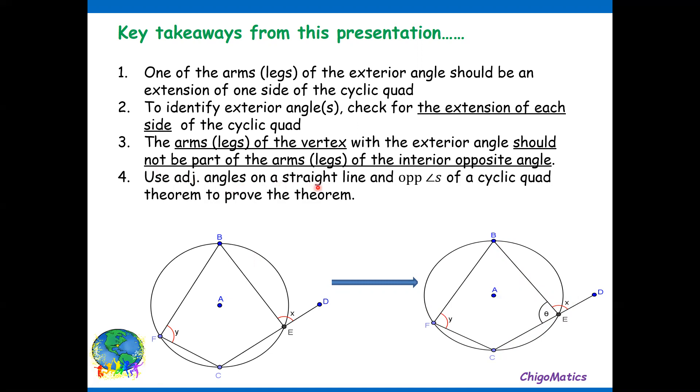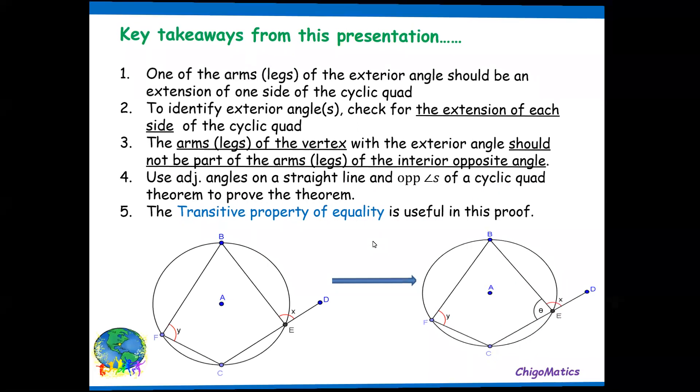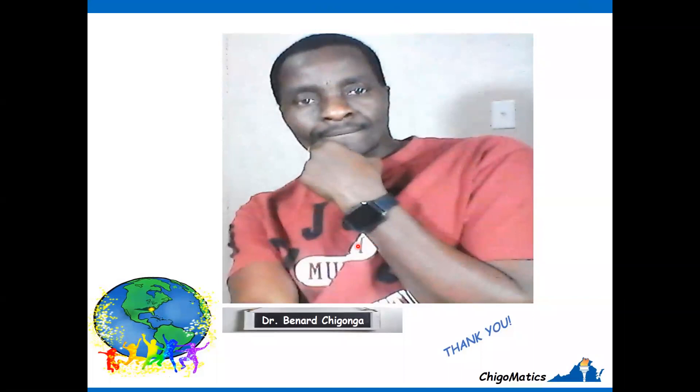Use adjacent angles on a straight line and opposite angles of a cyclic quad theorem to prove the theorem. The transitive property of equality is useful in this proof. I hope you understood. Thank you very much.